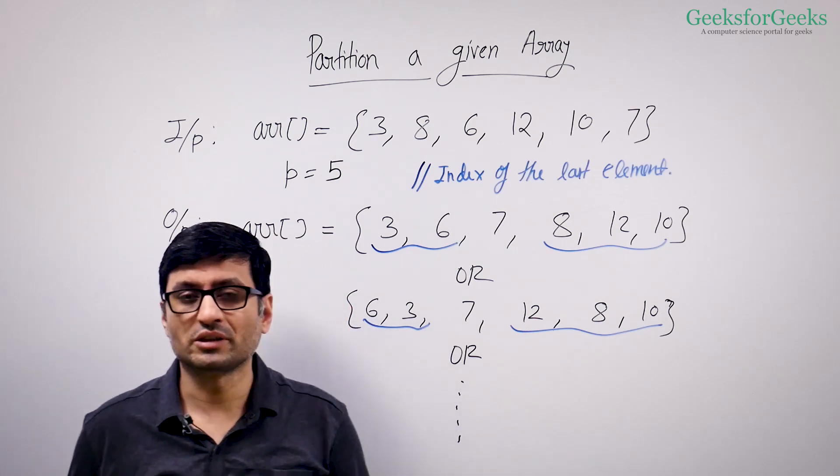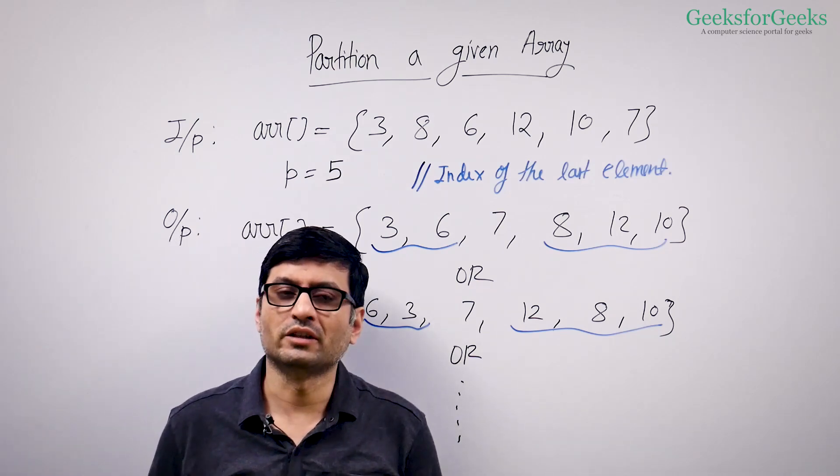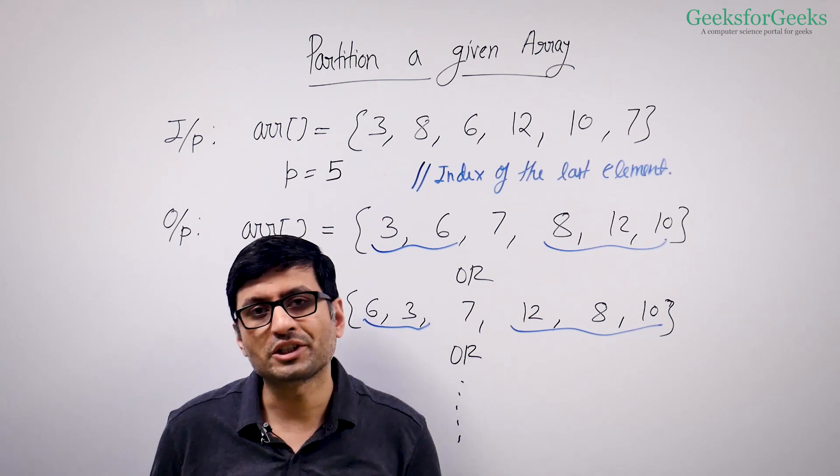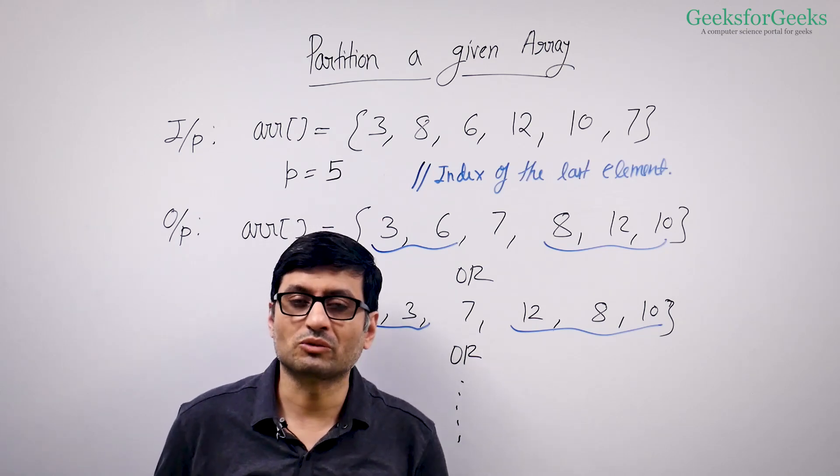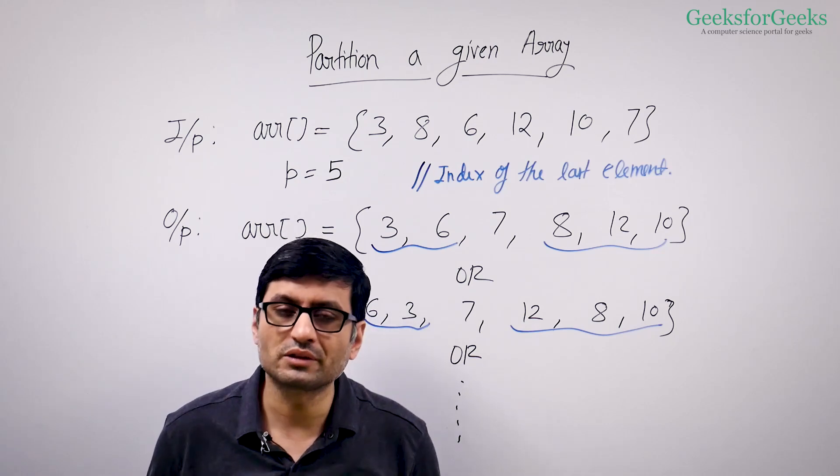You may think of different solutions. We will talk about three solutions of this problem. One is naive solution, then there is an algorithm called Lomuto partition, then there is another algorithm called Hoare's partition. We will talk about these three algorithms one by one.